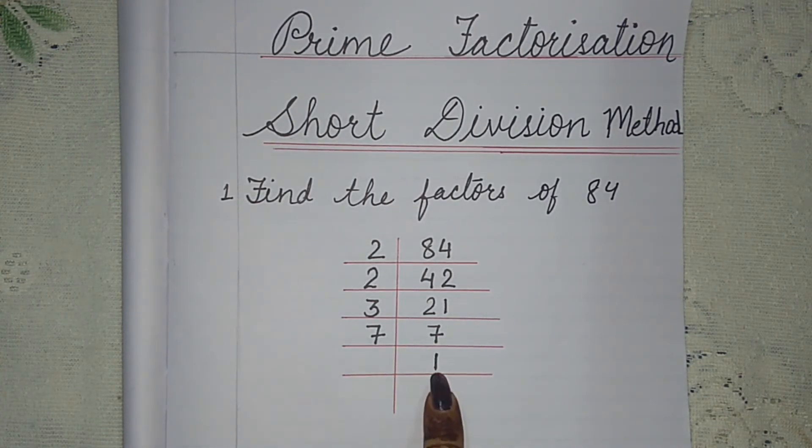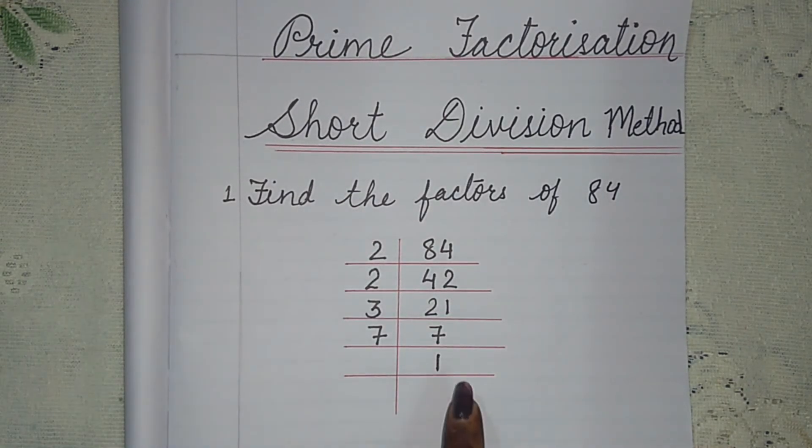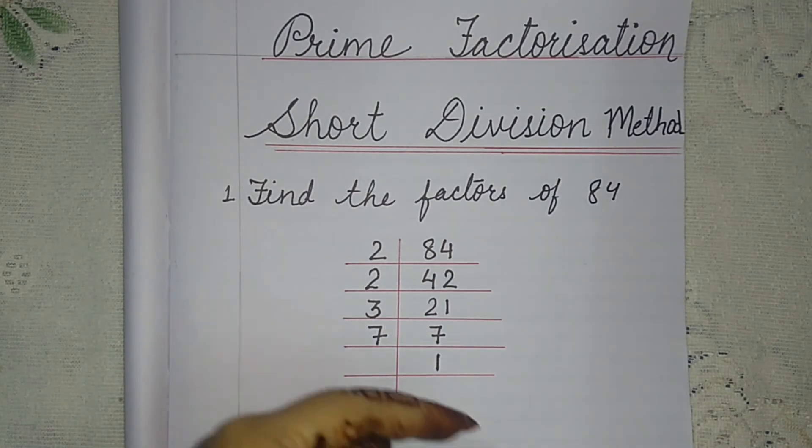Seven one times seven, so we will write here 1. This means your division method is complete. If 1 does not come at the last, you have to continue dividing until 1 comes.